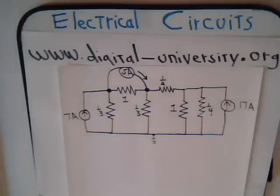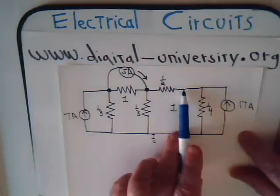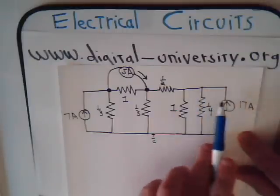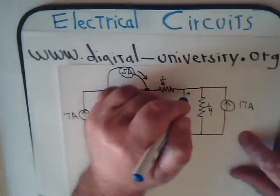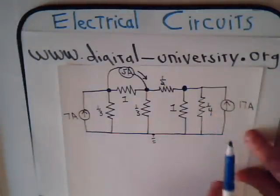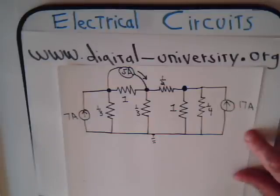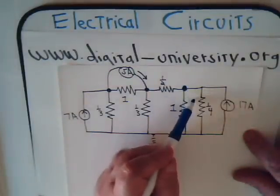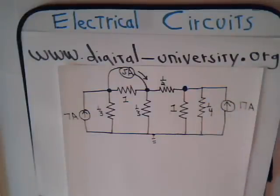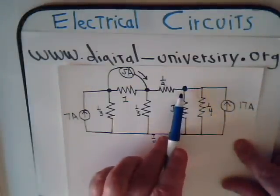We have two nodes in the upper part of the circuit so far. And then here is a node where this resistor, this resistor, this resistor, and this current element all feed into this single node. This other part is not a node — it is simply a conductor line. So this is the node point.